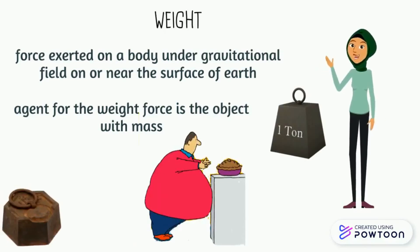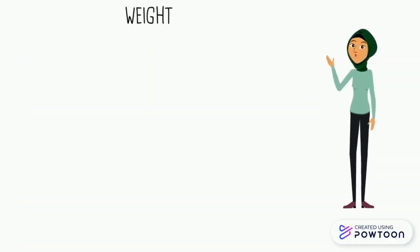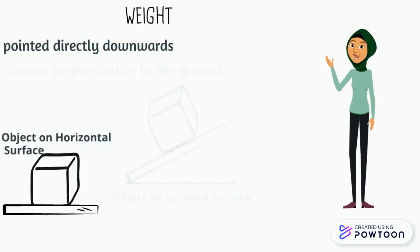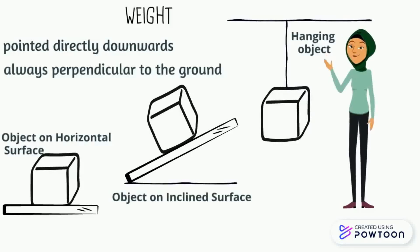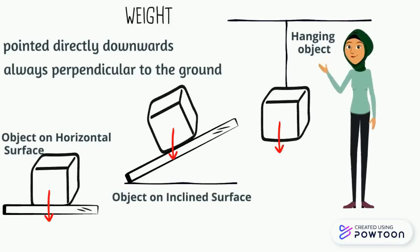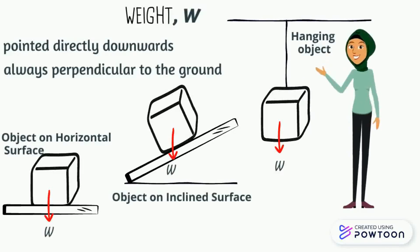Thus, the agent for weight force is the mass. Since force is a vector, the direction of weight is pointed directly downwards and always perpendicular to the ground for all cases. It is drawn from the center of the object directly downwards with the symbol W. The equation for weight is W equals mg, where W is weight, m is mass of the object, and g is the gravitational acceleration, 9.81 meters per second squared.